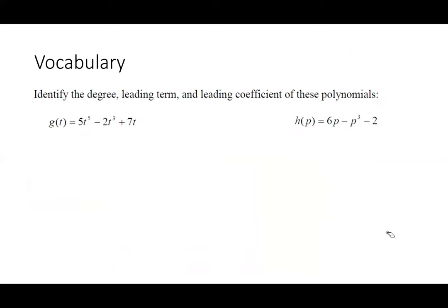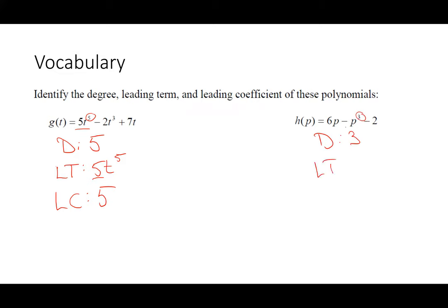Now identify the degree, leading term, and leading coefficient of these polynomials. For g(t), the degree is five because the highest power of t is five. The leading term is 5t to the fifth and the leading coefficient is five. For h(p), the highest power of p is three. The leading term is negative p cubed, which we can think of as negative one times p cubed. The leading coefficient is negative one.